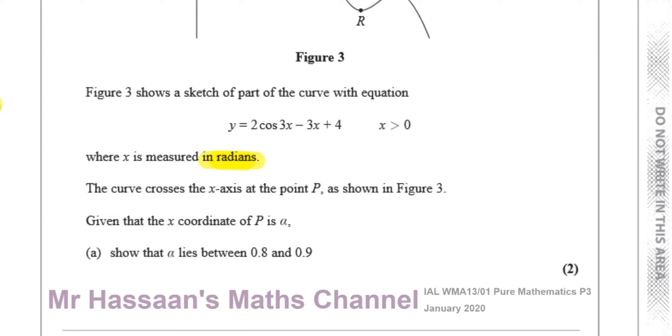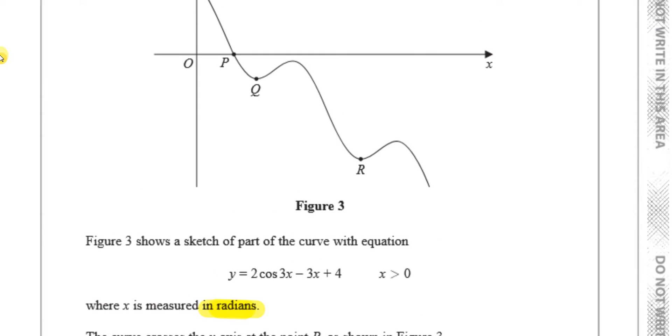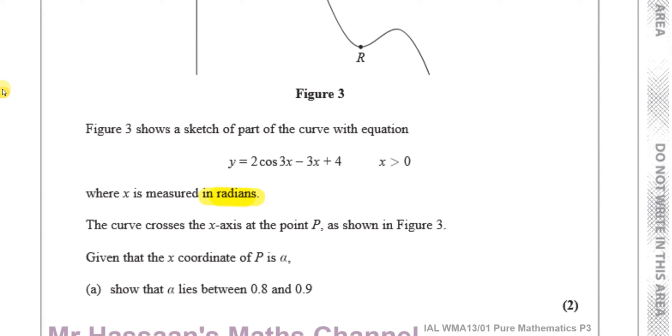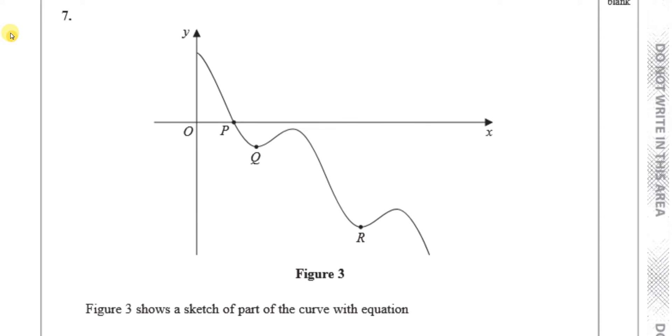Okay, it says the curve crosses the x-axis at the point P as shown. And given that the x-coordinate of P is alpha, show that alpha lies between 0.8 and 0.9.